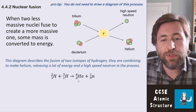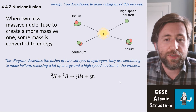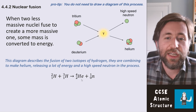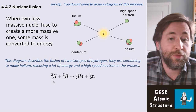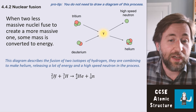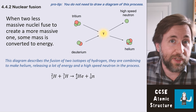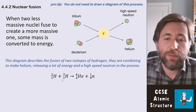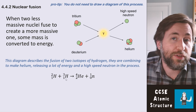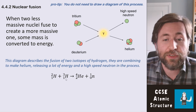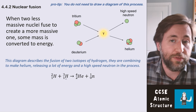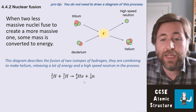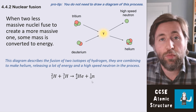You wouldn't be asked to write this equation, but you could be asked to interpret it. Deuterium is a hydrogen isotope with an extra neutron — mass of two. It combines with tritium, which is hydrogen with one proton and two neutrons — mass of three. Together they make helium, which is a particularly stable isotope, and release one neutron.